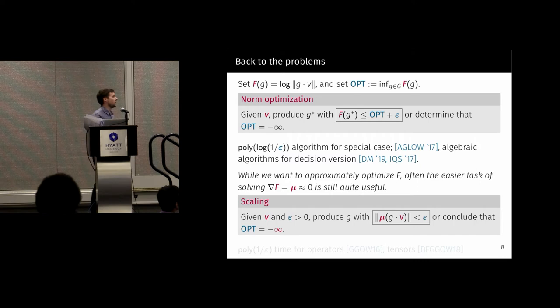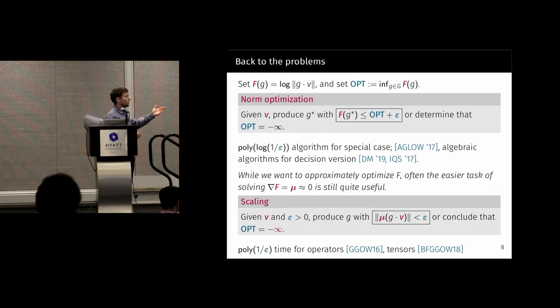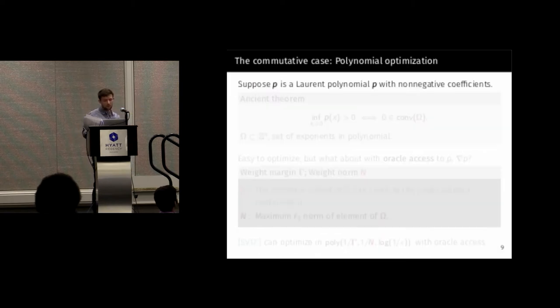In general, we would like to optimize f, but it's a bit harder. It's easier to optimize the gradient, or to set the gradient approximately equal to zero. So our easier problem is the scaling problem. Given a vector v, produce a group element g such that the gradient is as small as it possibly could be. For instance, for this problem, we get poly 1 over epsilon time algorithms. This sort of is more or less, you should think of it as a fairly easy task. For instance, we can do it for tensors, this tensor scaling action I mentioned, which we can't do norm optimization for, but we can do this scaling problem.